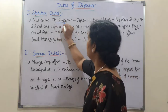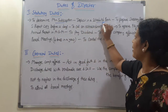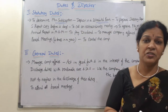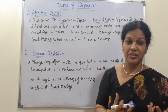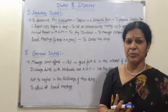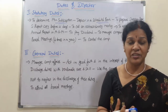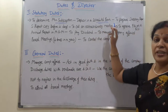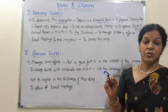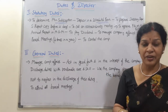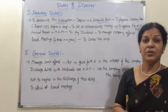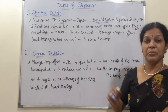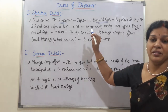The second statutory duty is to deposit funds in a scheduled bank. Whatever amount is received — from shareholders, debenture holders, loans, or banks — all of it must be deposited into a scheduled bank. This is a key statutory duty because the company runs its activities using only those funds, so proper deposit is essential.